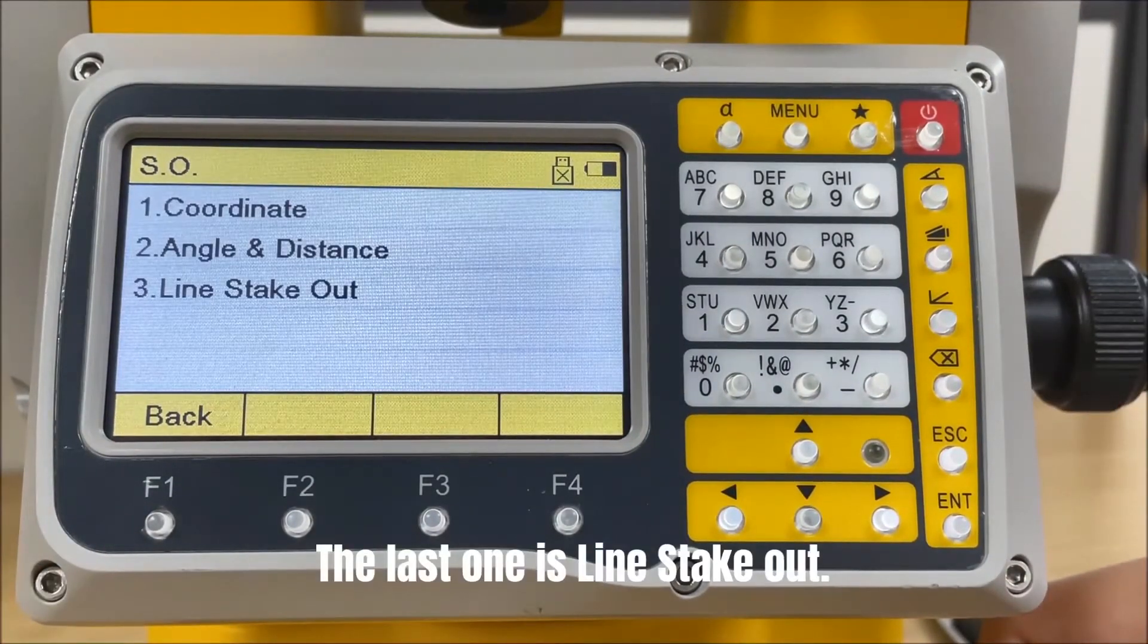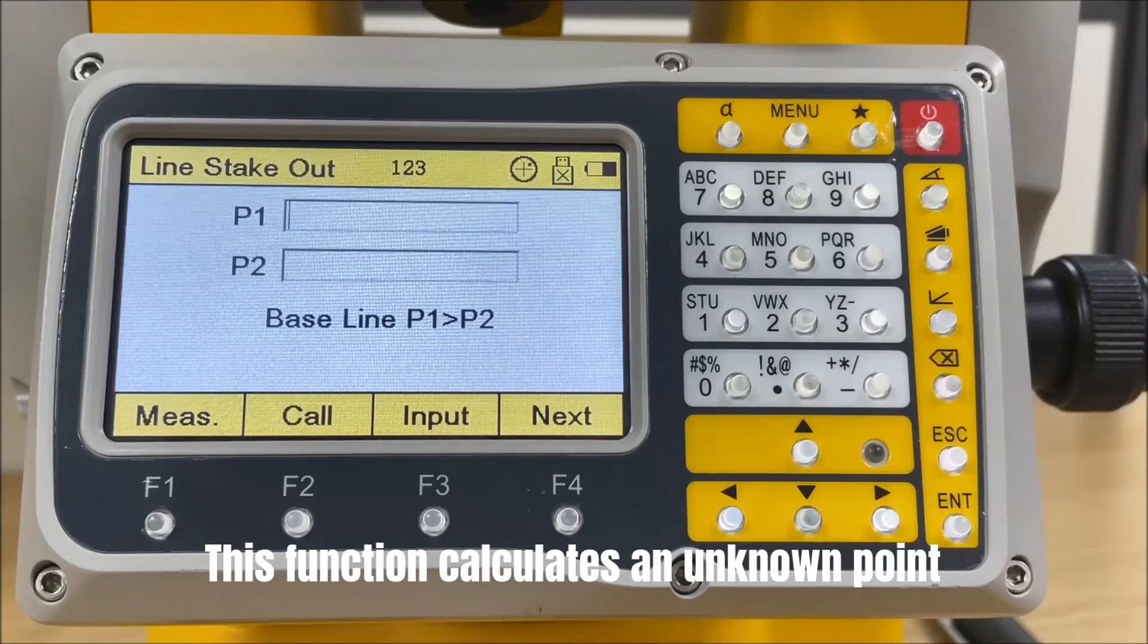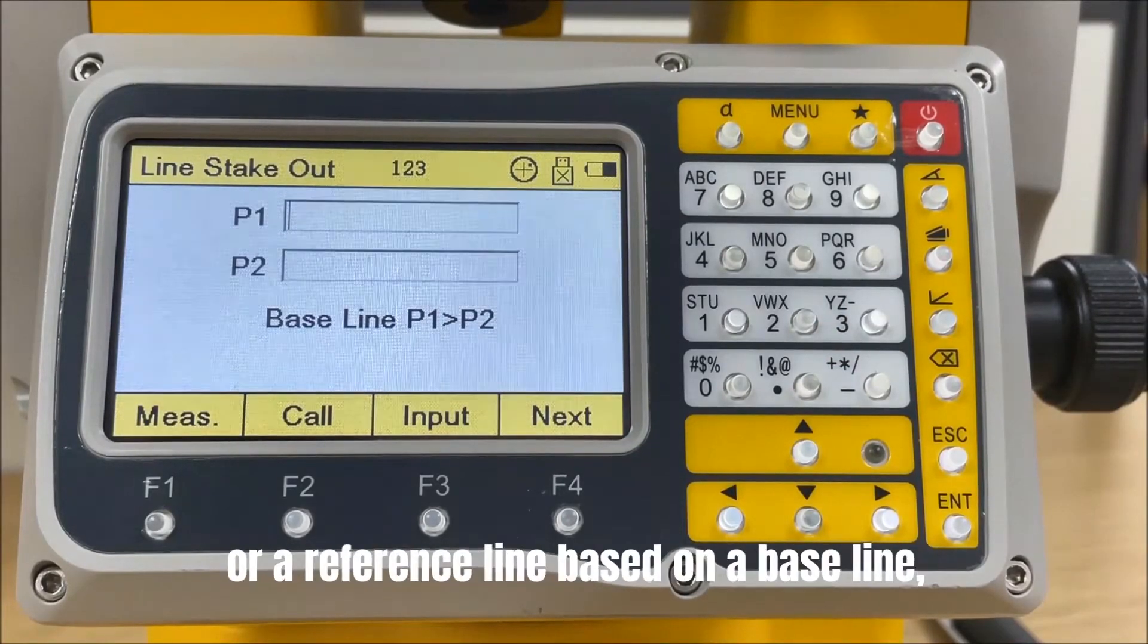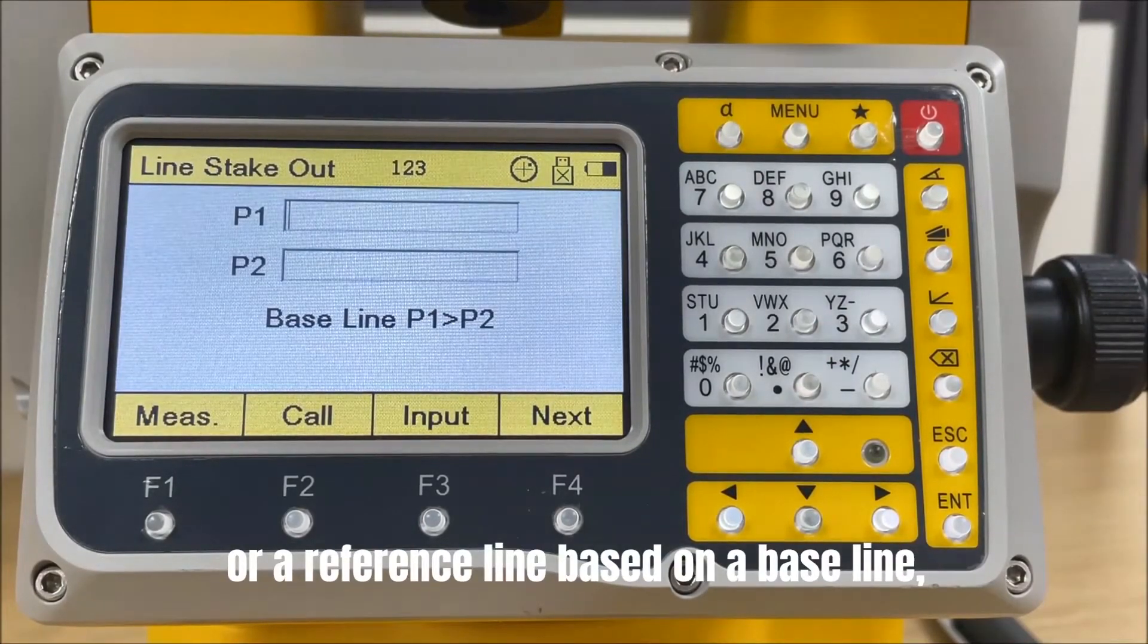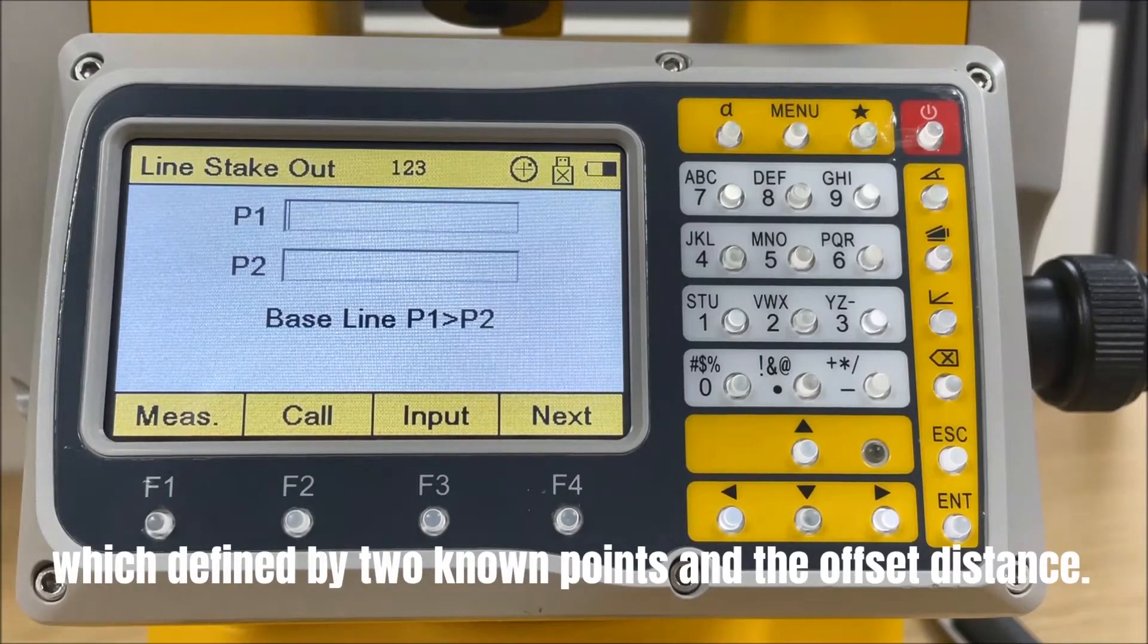The last one is line stake out. This function calculates an unknown point or a reference line based on a baseline, which is defined by two known points and the offset distance.